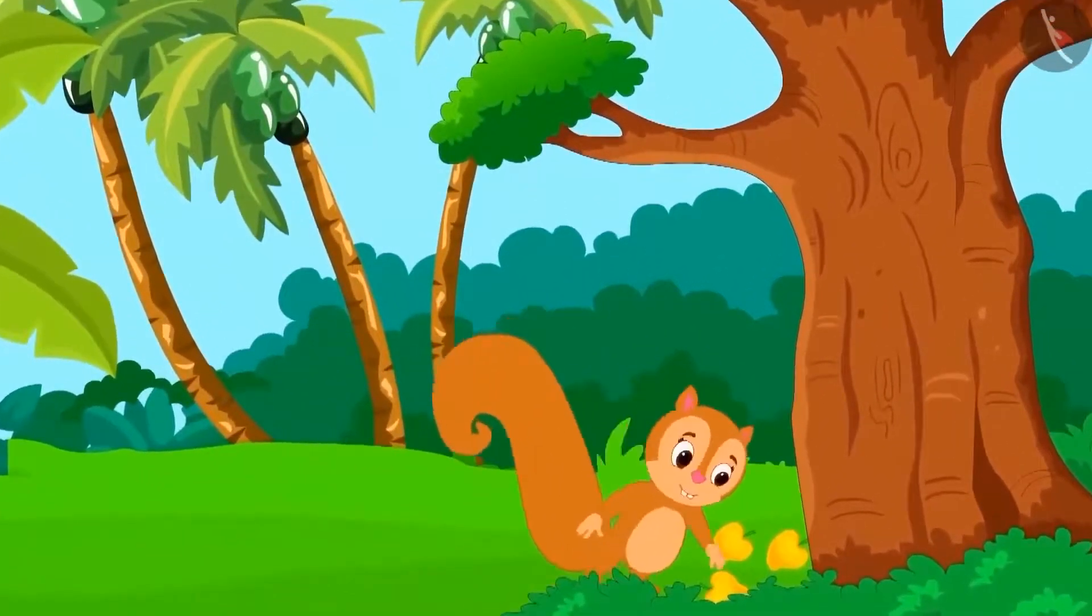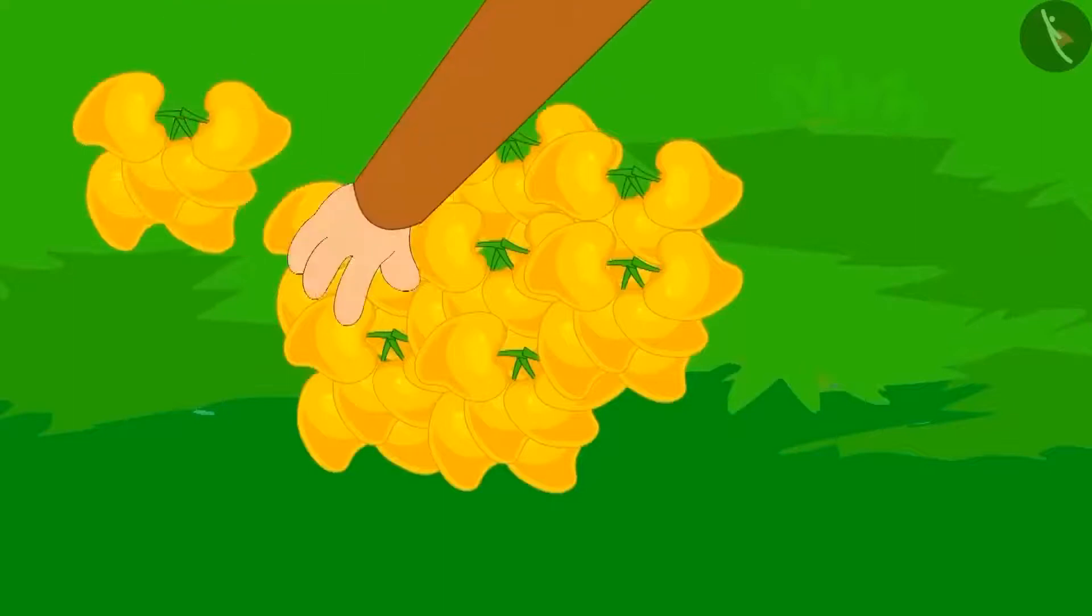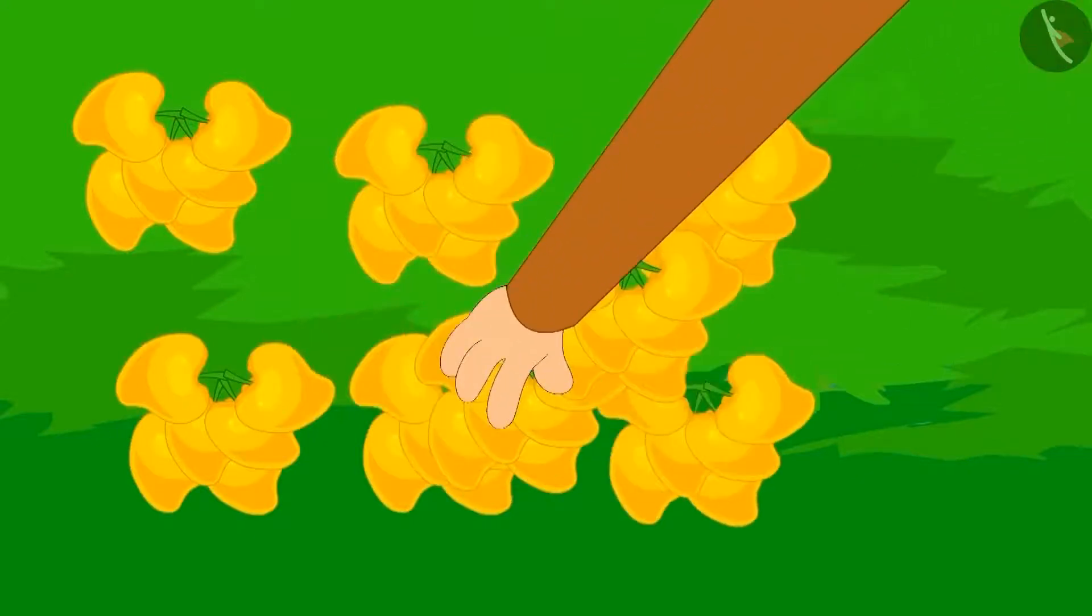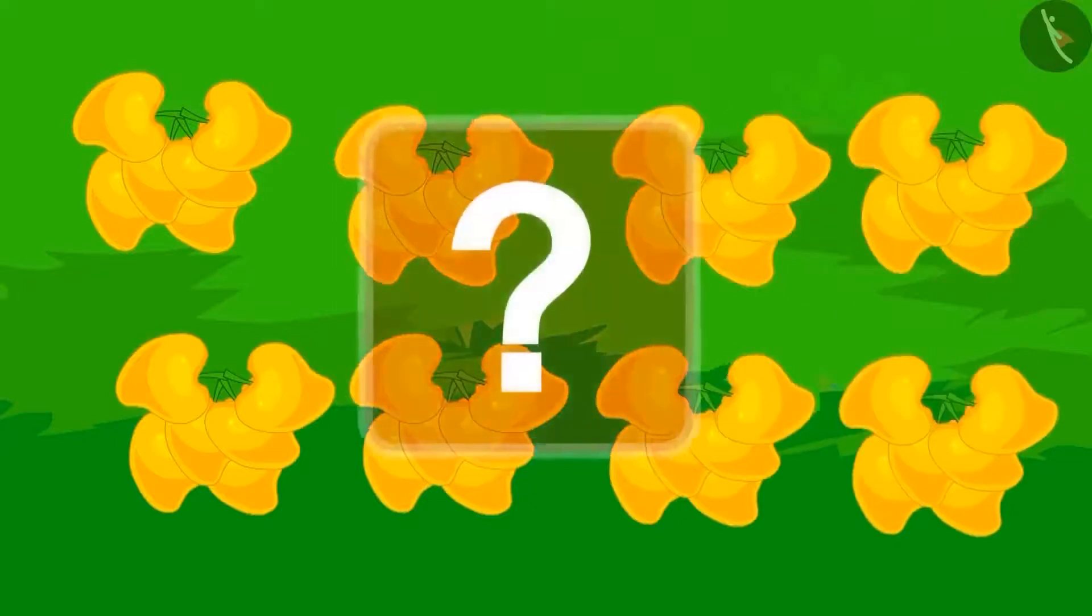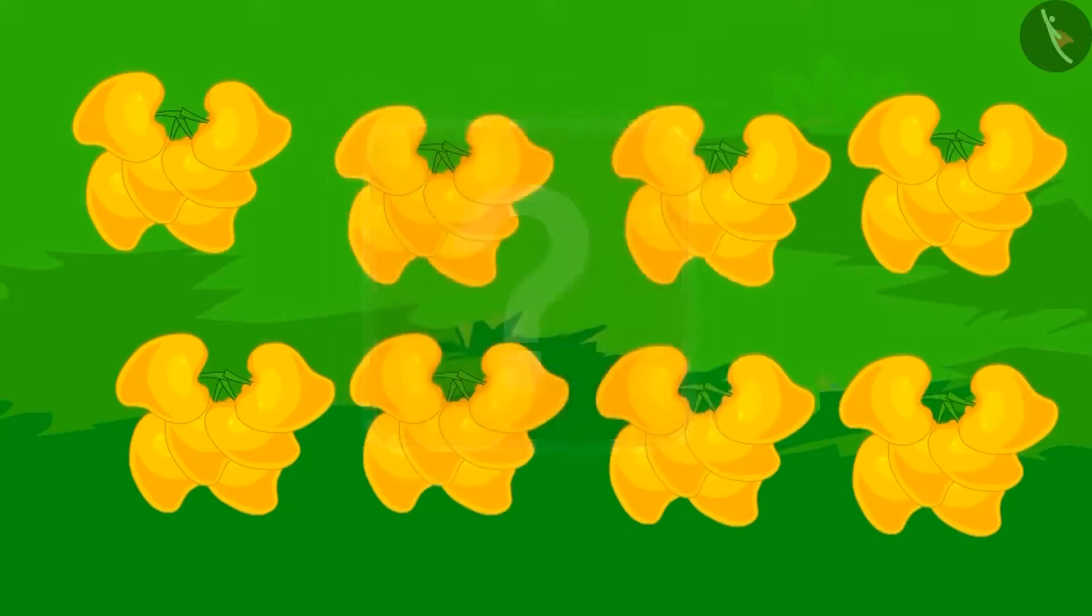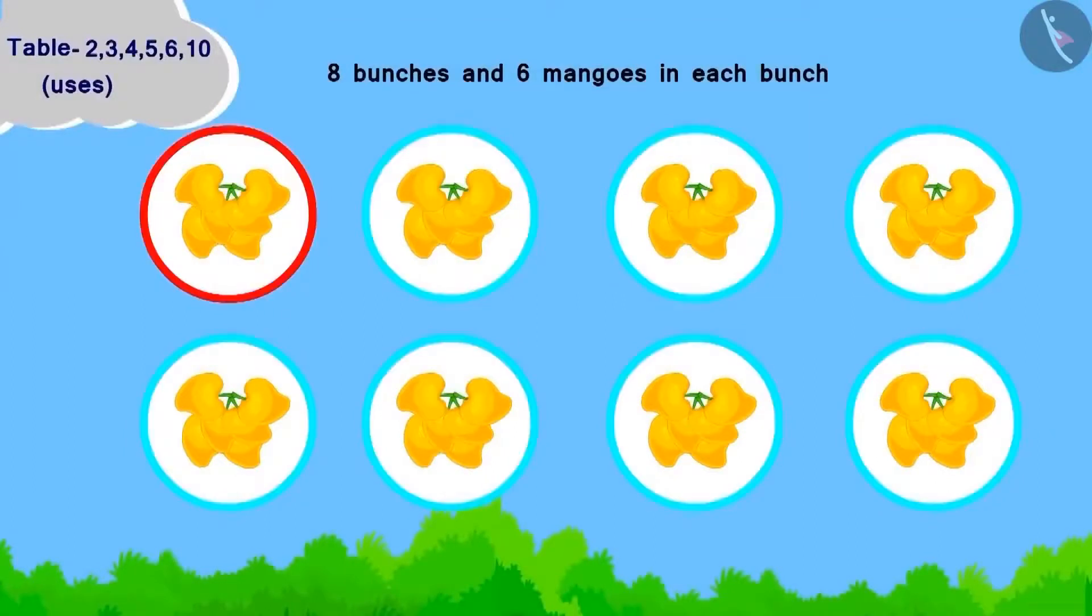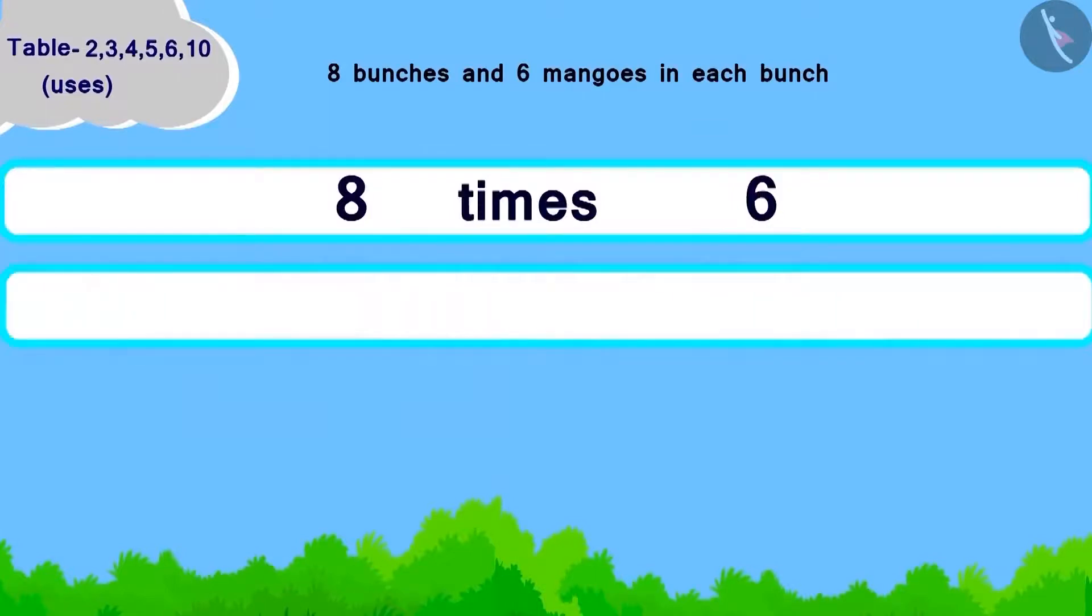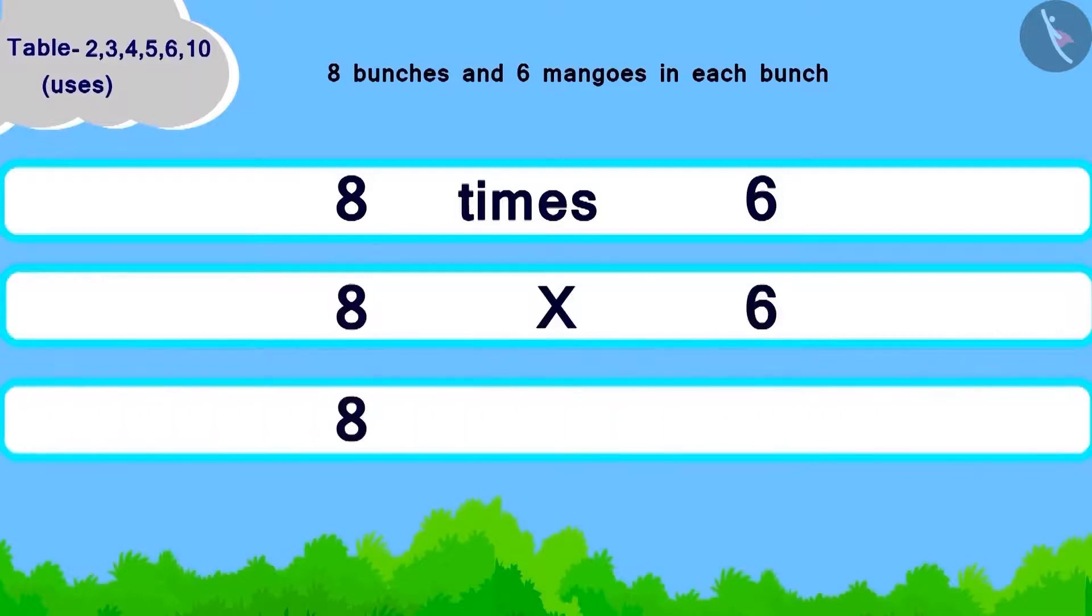Chanda collected a lot of mangoes from her mango tree and tied them in bunches of 6 mangoes each. Chanda now has 8 such bunches. Can you tell how many mangoes has Chanda collected in total? Chanda has got 8 bunches and every bunch has 6 mangoes in it. How will we write this? 8 times 6. Now, how will we write it as multiplication? 8 multiplied by 6. Now, using the table of 6, they become 48.